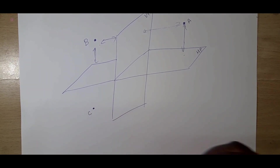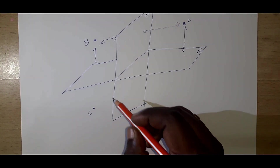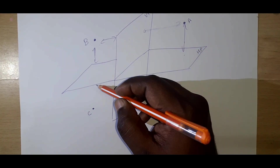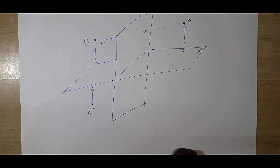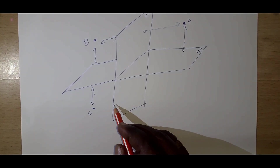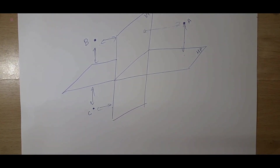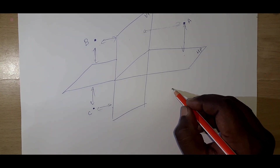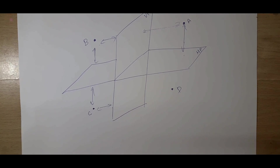For the third quadrant, we have point C. Unlike the first quadrant which is above, here the object is below the horizontal plane and behind the vertical plane.